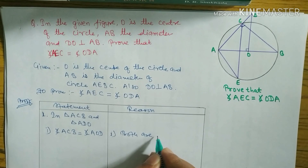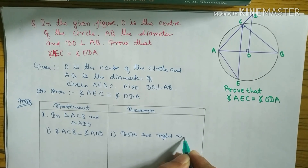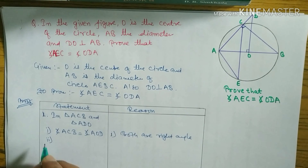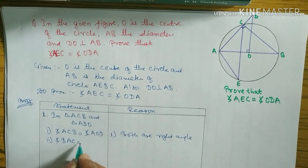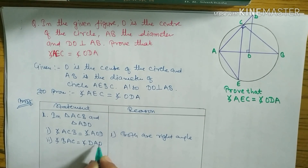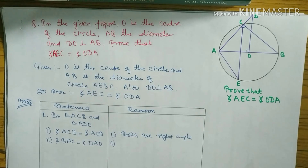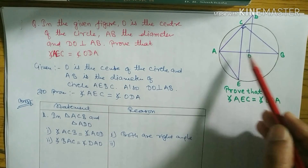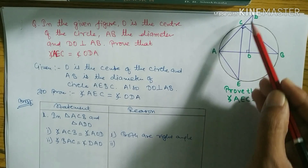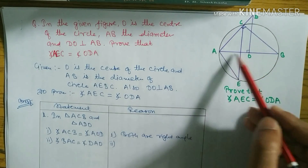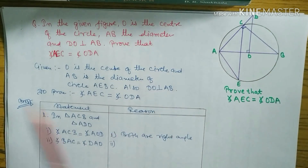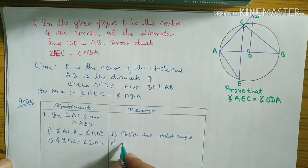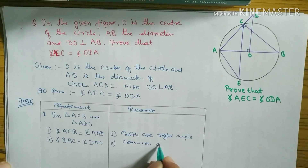Statement two: angle BAC equals angle OAD. Looking at the diagram, for triangle ABC the angle at A, and for triangle ADO the angle DAo — both are the same angle. The reason is: common angle. This angle is common to both triangles.